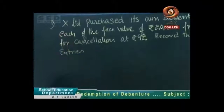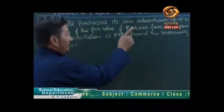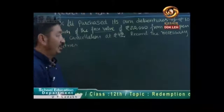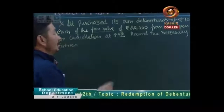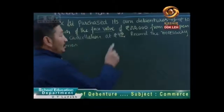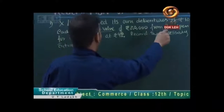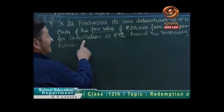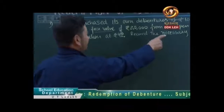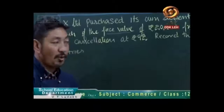Our question: X Limited purchased its own debentures of rupees hundred each at face value. The debenture's face value is 100 rupees. 20,000 amount of debentures were purchased from the open market for cancellation at Rs. 92. Record the necessary journal entries.